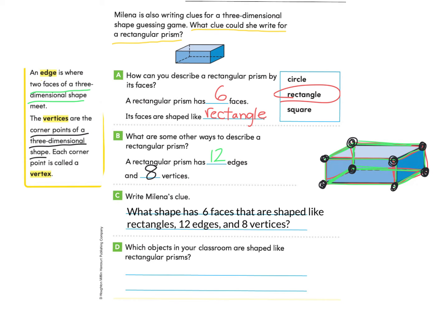Great job. Now let's look at part D: Which objects in your classroom are shaped like rectangular prisms? Maybe you want to look around your house for a rectangular prism. A few things I found are a book and a file cabinet in the classroom. Maybe you found something different — you can write that in part D.